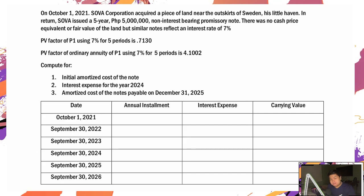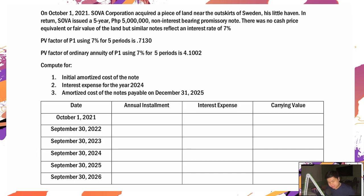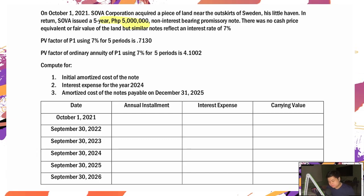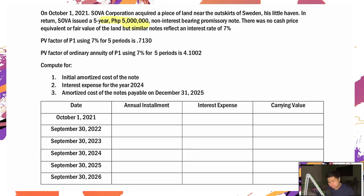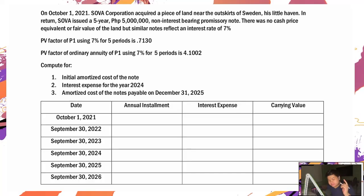Tanungin kita — lump sum or installment? Basahin natin. Yung 5 million, wala nang sinabi na may babayaran buwan-buwan o taon-taon or whatsoever. So safe to assume ito ay annual, at kung ito ay annual, safe to assume na ito ay lump sum — isang bagsakang bayaran.